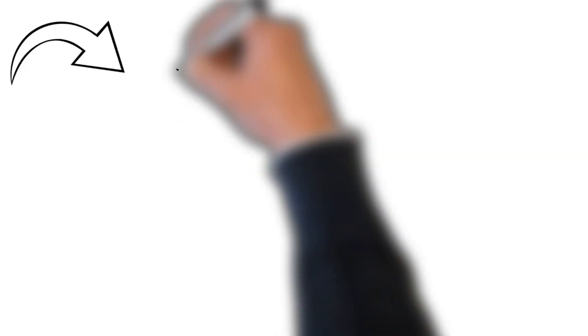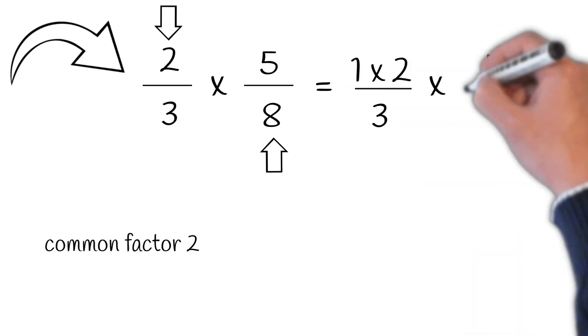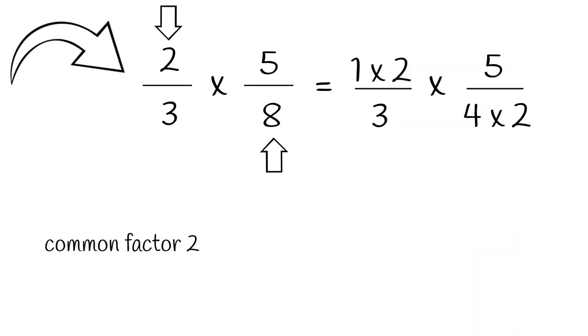Coming back to our example, we know that 2 and 8 have the common factor 2, which means we can rewrite them this way: 1 times 2 and 4 times 2. Since dividing two of the same numbers equals 1, we can simply cross them out, which leaves us 1 and 4.